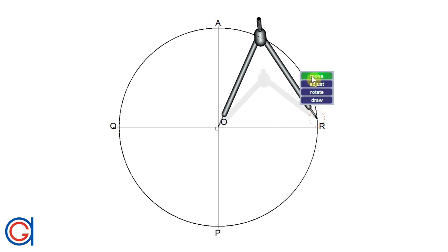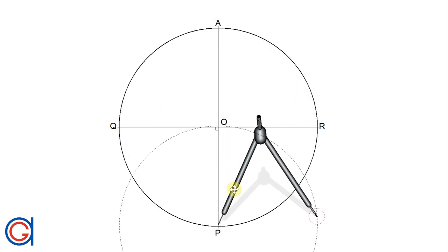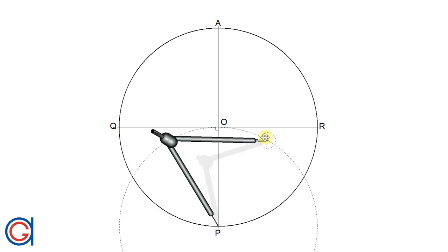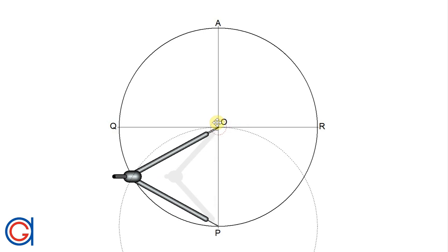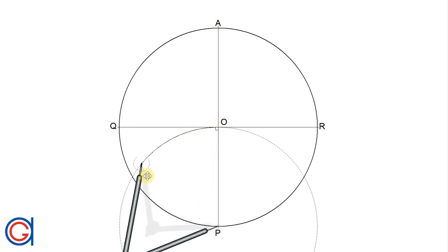To continue, the next step is setting the compass to the length of the given radius OR, and setting the compass on the point P, we will describe an arc to the left until it cuts the circumference at a new point which we will call S.